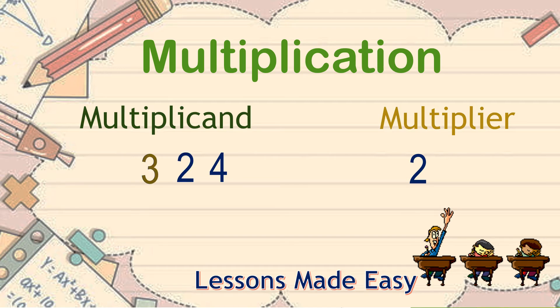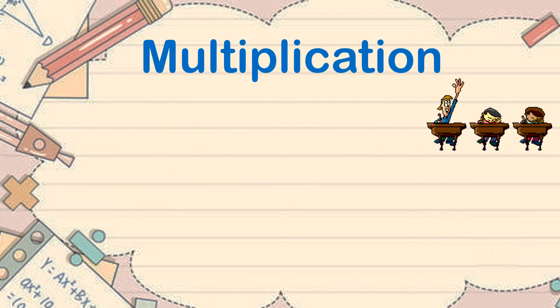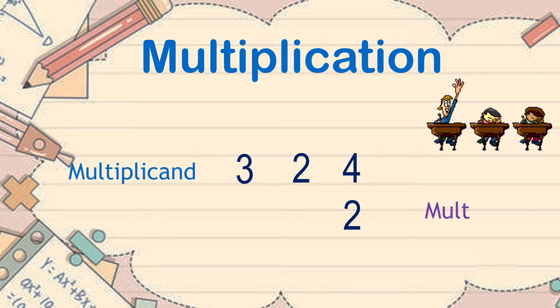See this example, 324 times 2. How do we go about it? What's the first thing we should do? Although we said earlier that regardless of the position of the numbers, we have the same answer, it is still advisable to place the number with many digits first as the multiplicand and the number with less digit as the multiplier.